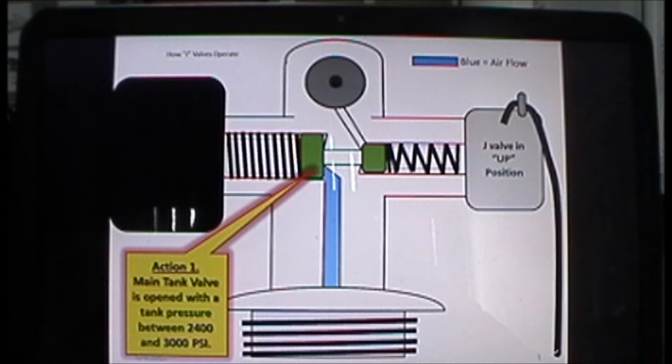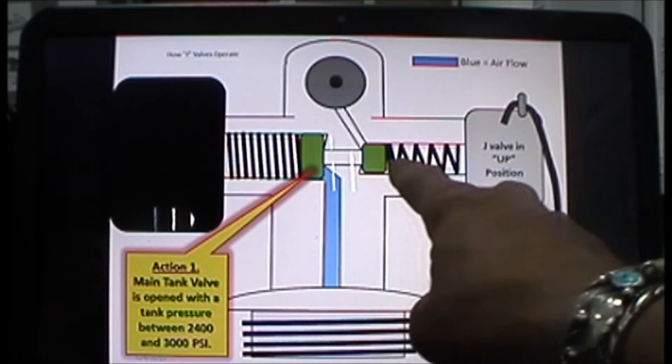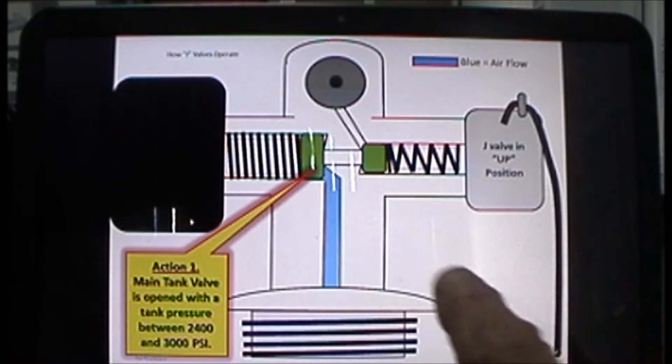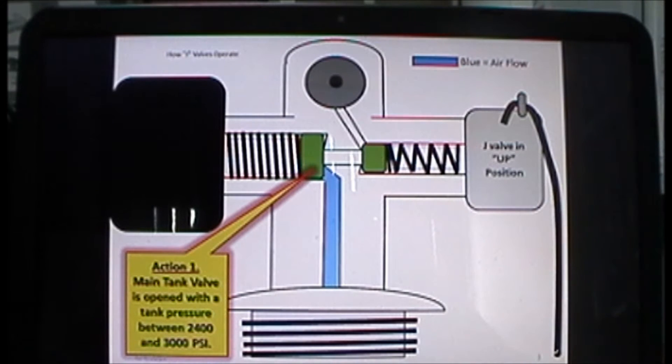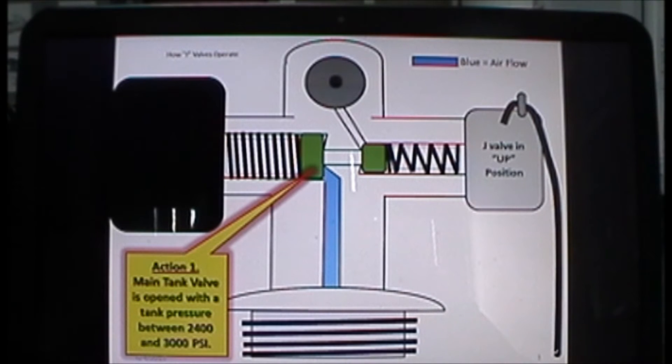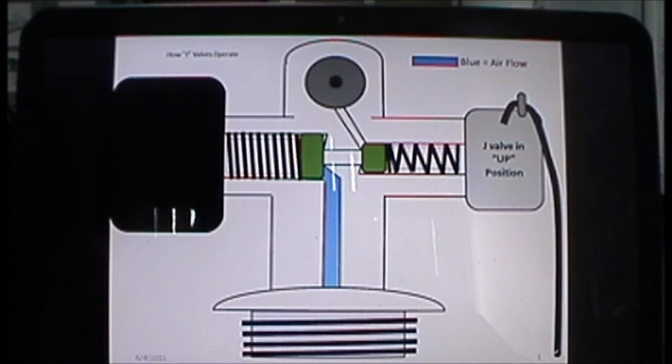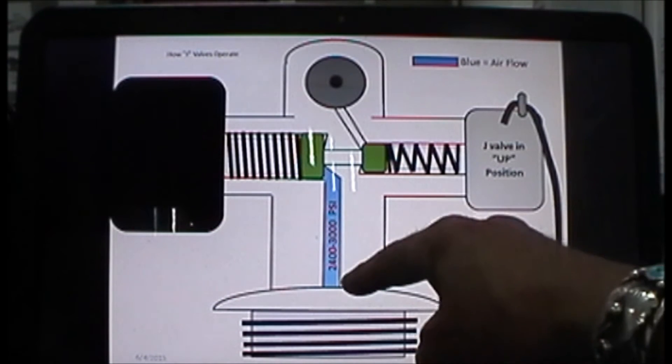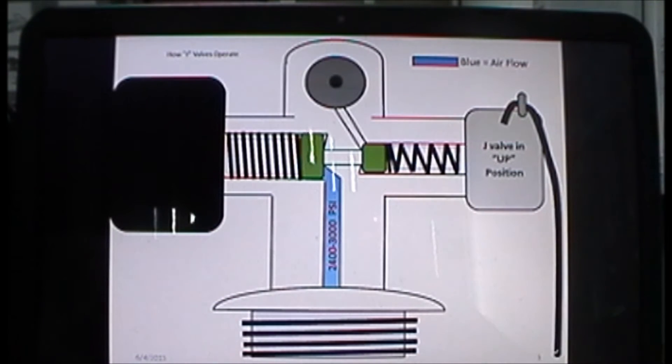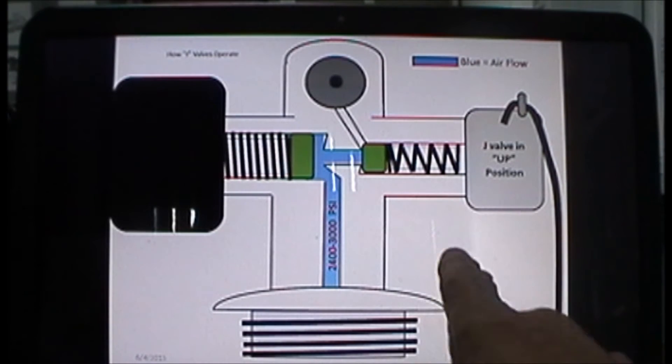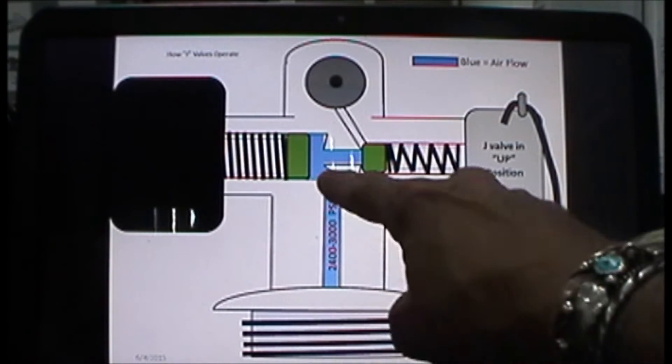This is the main cracking valve for the J valve itself, and over here is your J reserve valve. You actually have two valve seats in the same tank valve. The first action: the main tank valve is opened with a pressure between 2,400 and 3,000 PSI, and air...